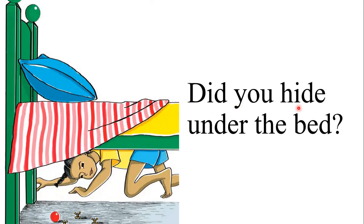Did you hide under the bed? This is the word hide. H-I-D-E says hide. Now, if you notice, the word hide has two vowels: I and E. Because there are two vowels, the first one does the talking, so the E is silent. When you pronounce the word hide, you don't hear the E sound. H-I-D-E, hide. Did you hide under the bed?